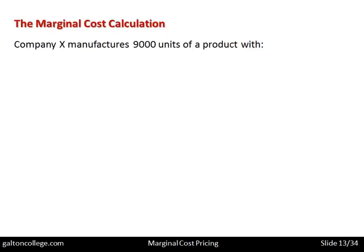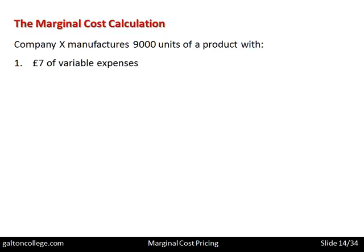Now, let's do a calculation. Company X manufactures 9,000 units of a product with £7 of variable expenses. And £4.75 of allocated overhead expenses are required — to cover the overheads, it needs £4.75 per unit.